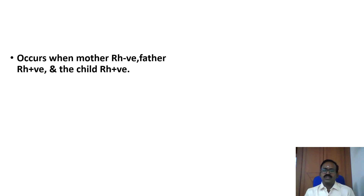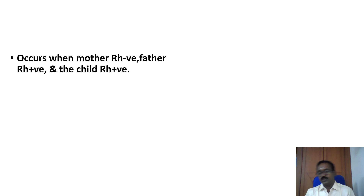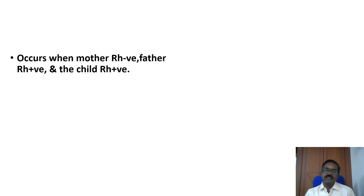Erythroblastosis fetalis occurs when the mother is Rh negative, the father is Rh positive, and the child is Rh positive. So the mother should be Rh negative and the child should be Rh positive — it is mainly dependent on the father being Rh positive.